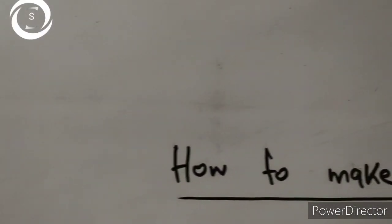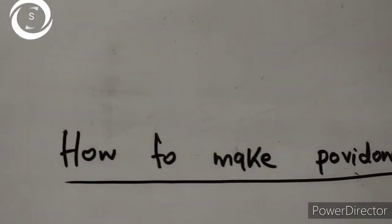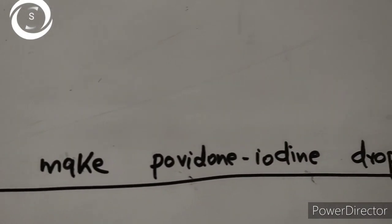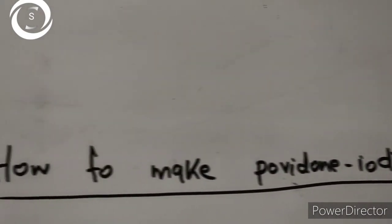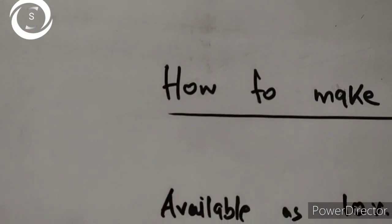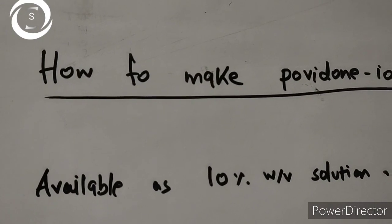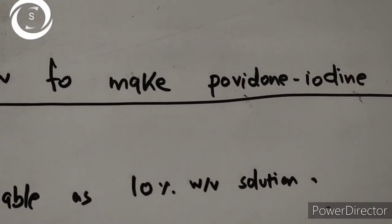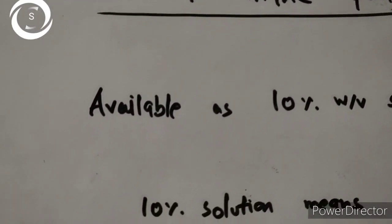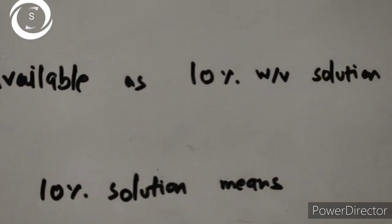One problem is the availability of povidone iodine in diluted form. So today I would like to show you in this video how to make 1% and 2% povidone iodine solutions from the conventional 10% formulation, which is available as a 10% weight-by-volume solution. We will first make the 2% solution.